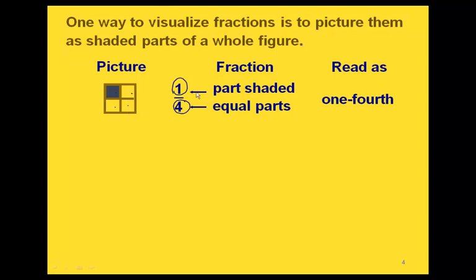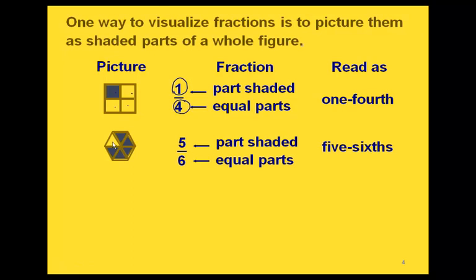So here's what our fraction would look like, and we would read this as 1 fourth. In this one, we have six equal parts in our picture, and out of those six, 1, 2, 3, 4, 5 are shaded. For our fraction, we end up with a numerator of 5 and a denominator of 6. And we would read this as 5 sixths.